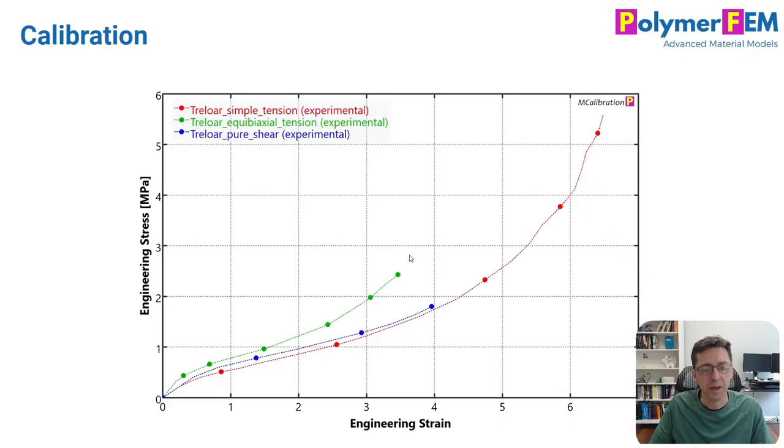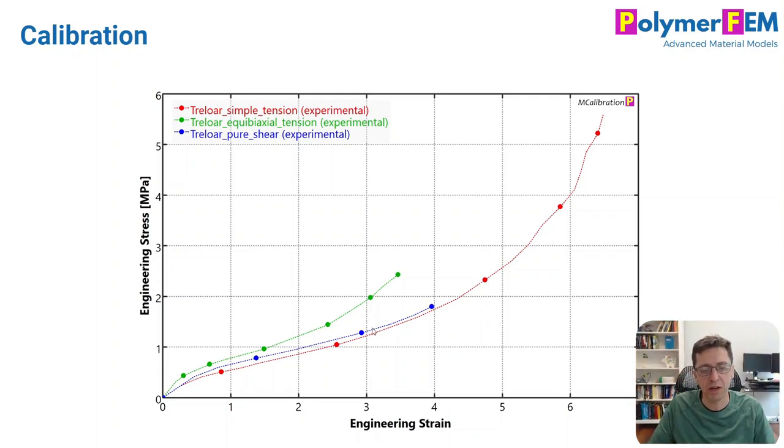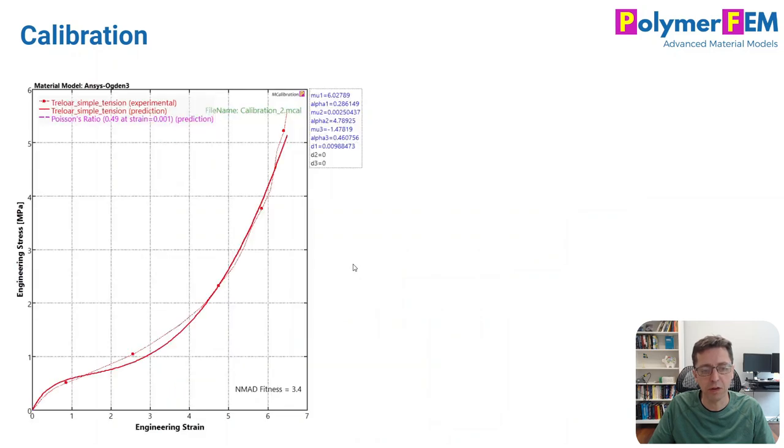Number four is the calibration. This material model is a little tricky to calibrate. So to demonstrate that, I will use experimental data from Treloar. Here's my Treloar book that has this data in it. It's uniaxial tension, biaxial tension, and pure shear.